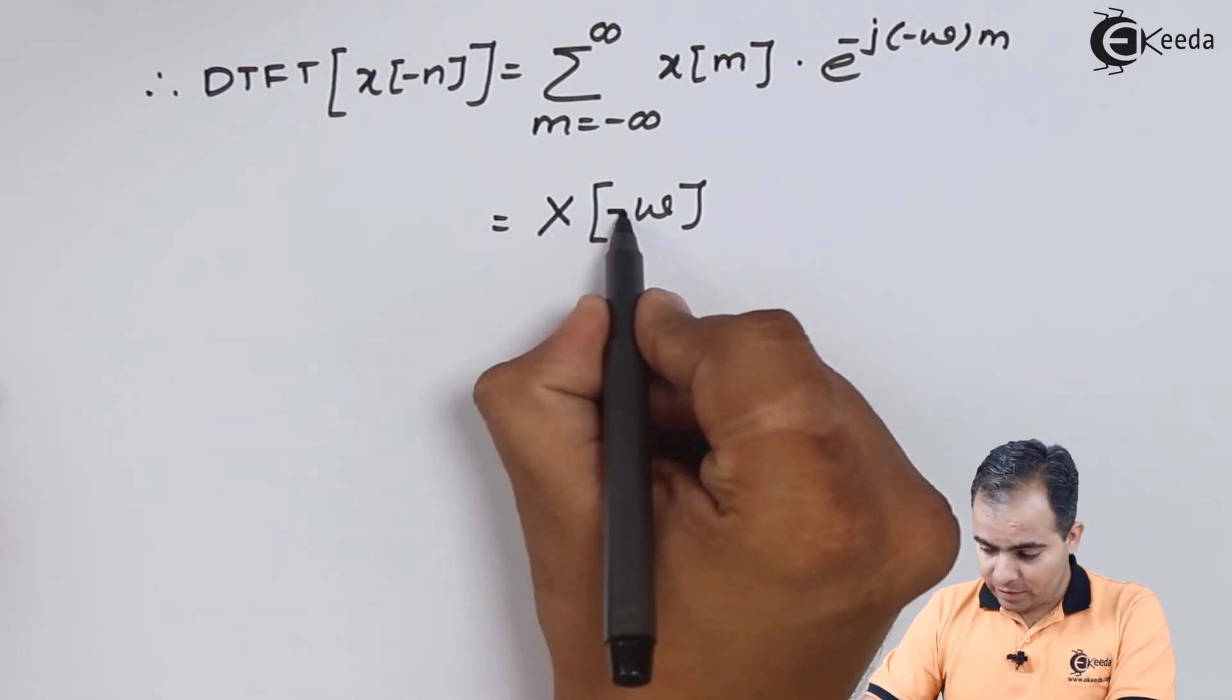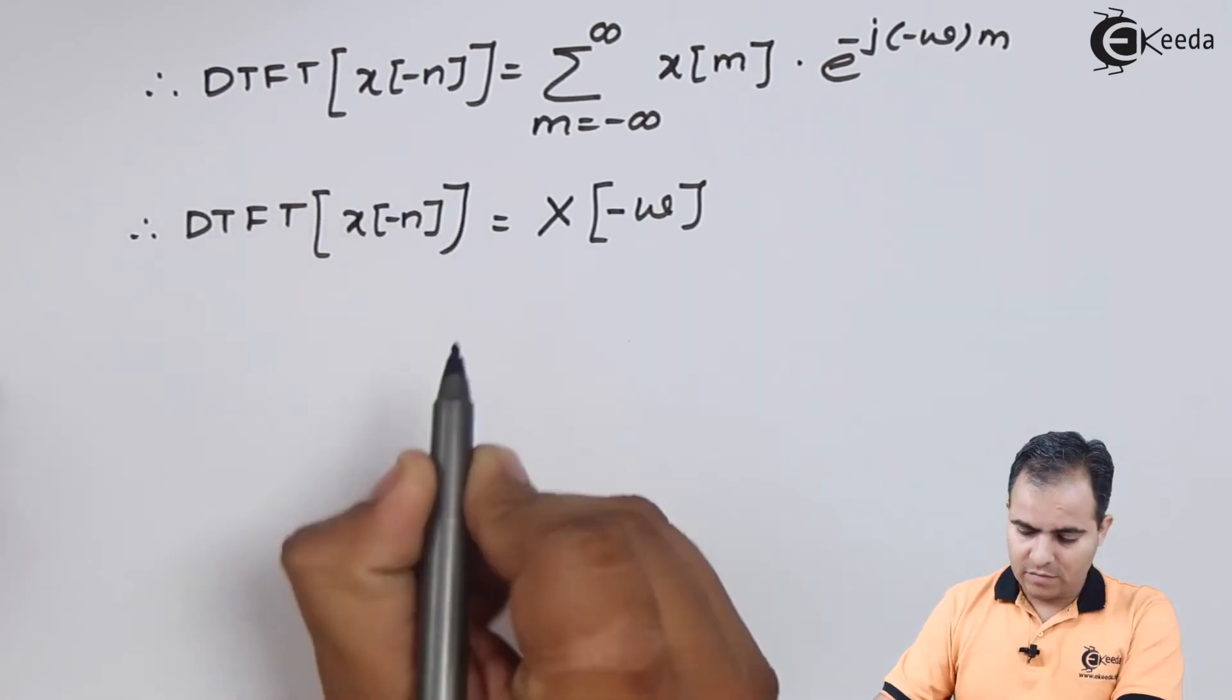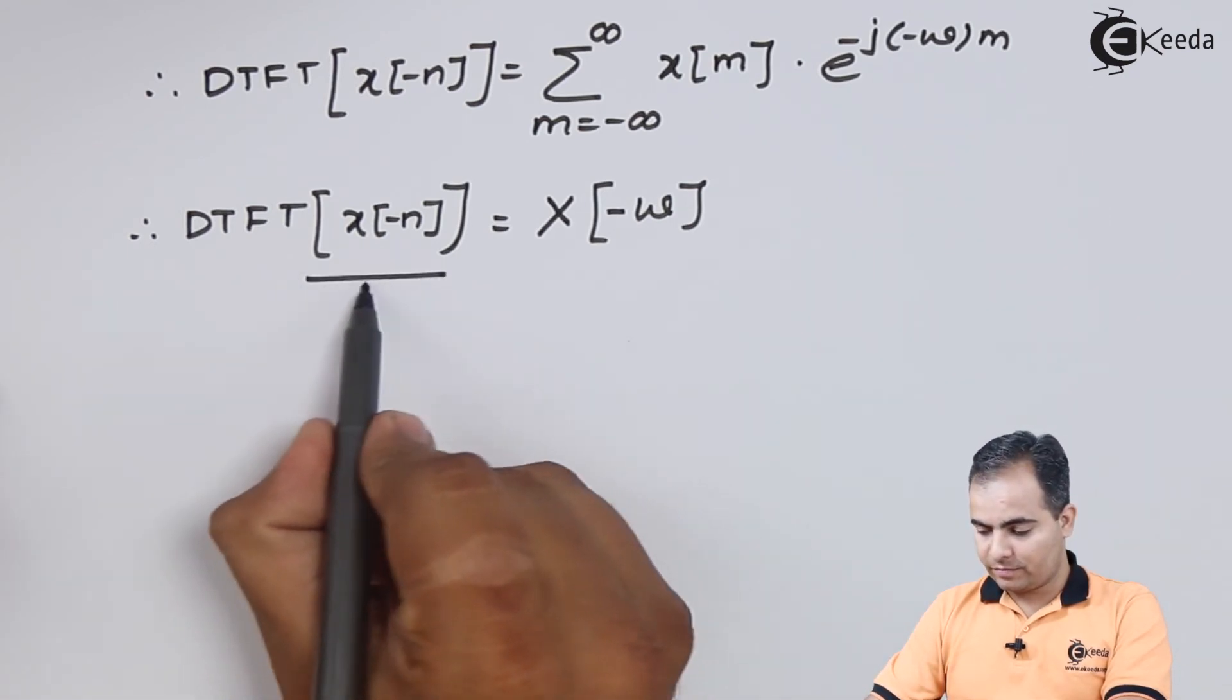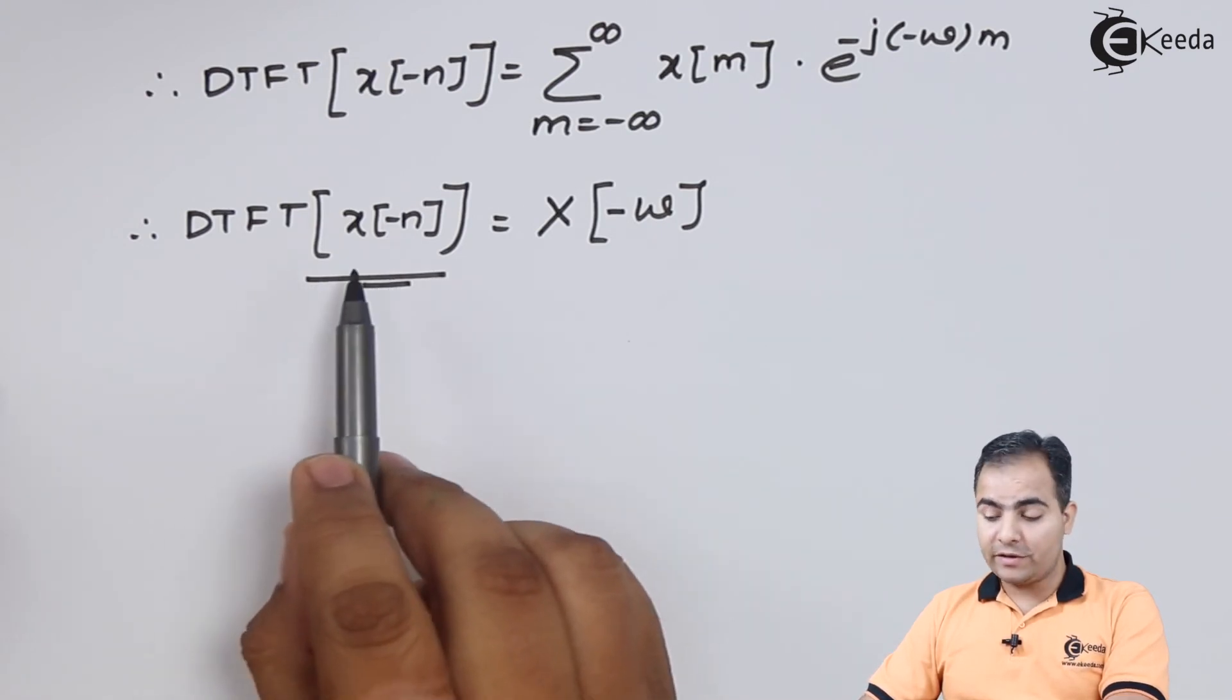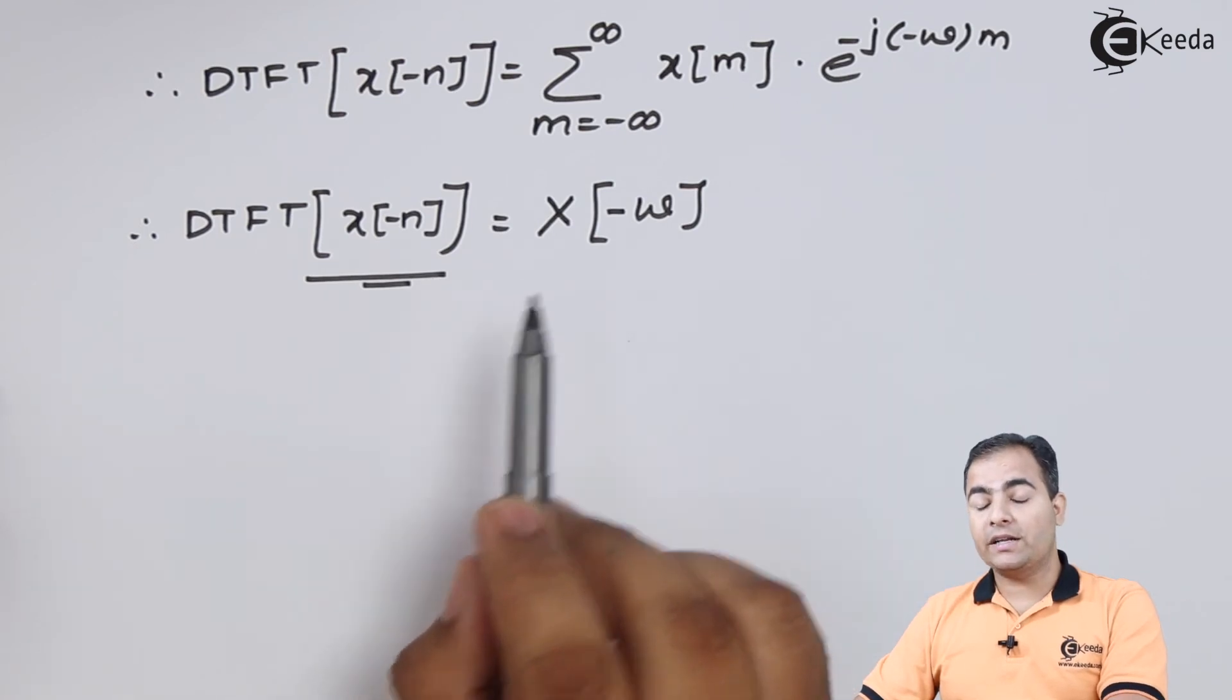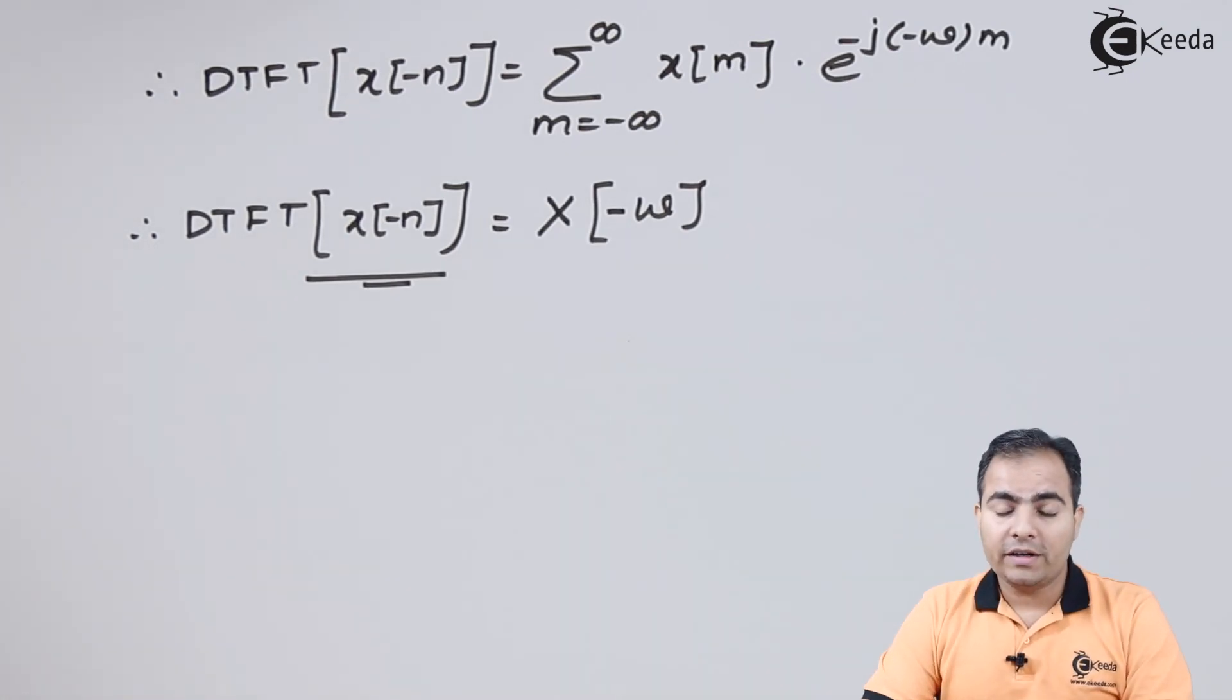So DTFT of x of minus n is X of minus omega. Means if we take or if we apply a time reversal property, or if you take the mirror image of input sequence, that same effect you can see in discrete domain or you can say discrete time Fourier transform. Now this is all about the time reversal property.